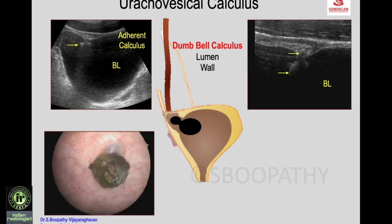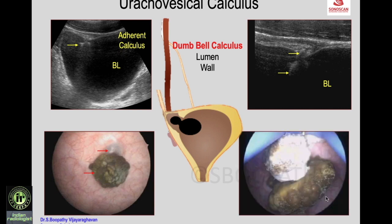During cystoscopy, the component of the calculus within the urinary bladder and within the uracovesical diverticulum is visible. After removal, the typical dumbbell-shaped calculus is demonstrated — the intravesical portion and the portion within the diverticulum in the wall of the urinary bladder.